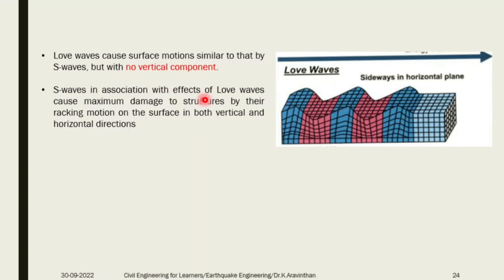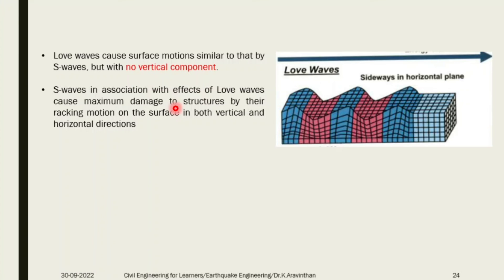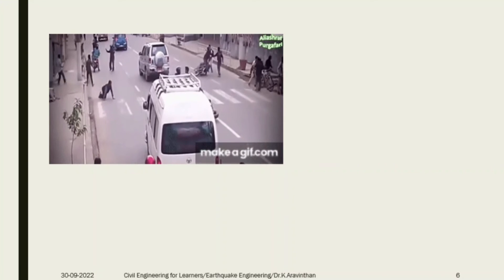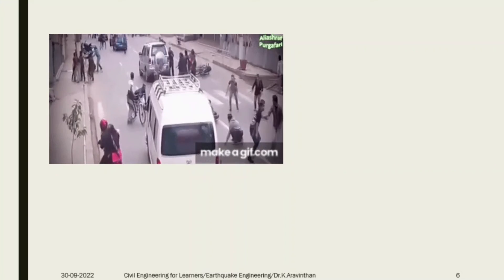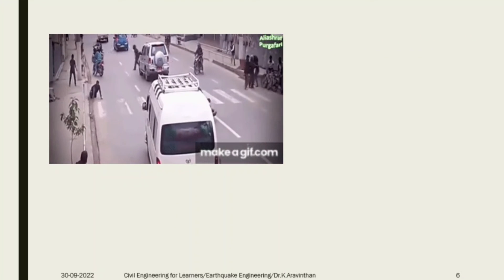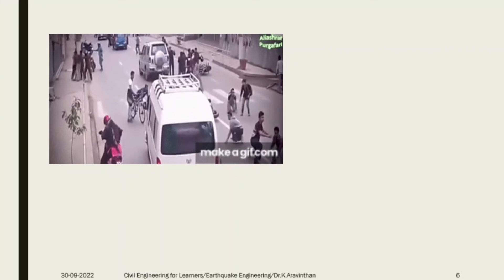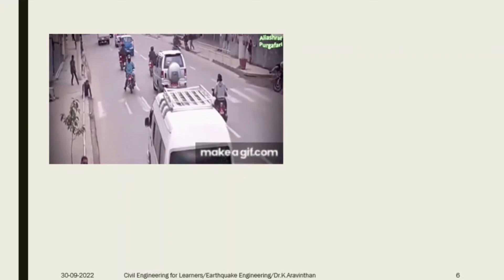S wave combined with Love wave causes maximum damage. The S wave moves up and down and the Love wave moves in horizontal direction. If both are combined, the building will move up and down and also sideways. You will not get clarity about what is happening around you. The secondary wave will not give you proper vision - that is why vehicles are stopped and you cannot pass in certain directions because your vision and footing will not be grounded properly.